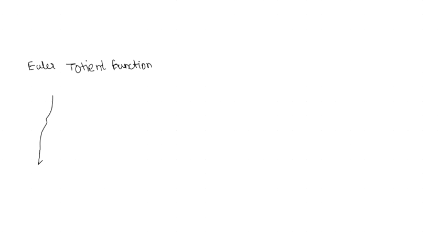It is usually denoted by phi of n, which is the number of co-prime numbers less than n. I have just learned about this; I don't have the proper proof of it, but I will take you through the steps and we will see how we can figure out phi of n for any n.